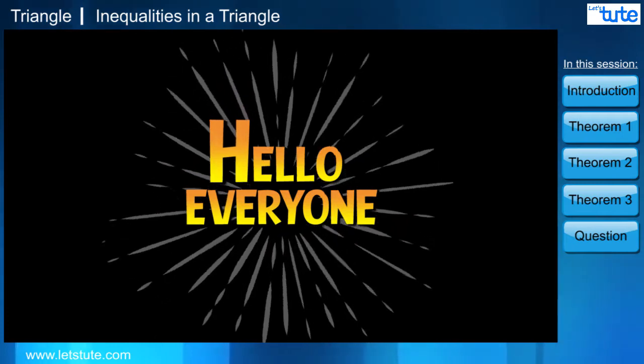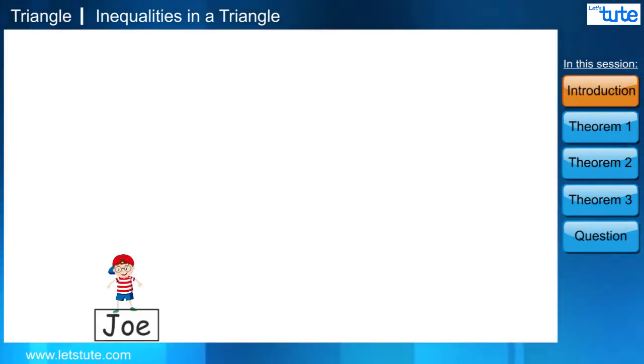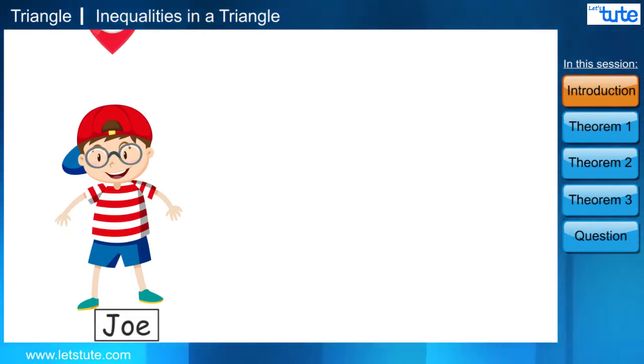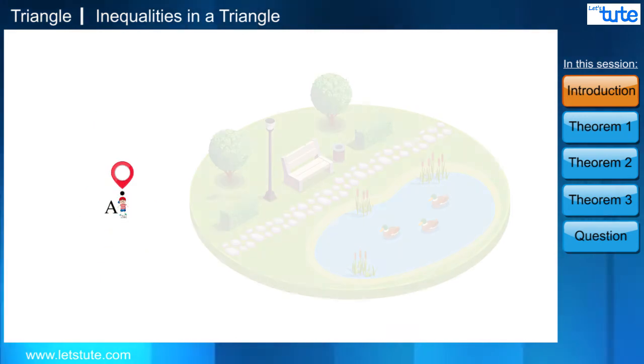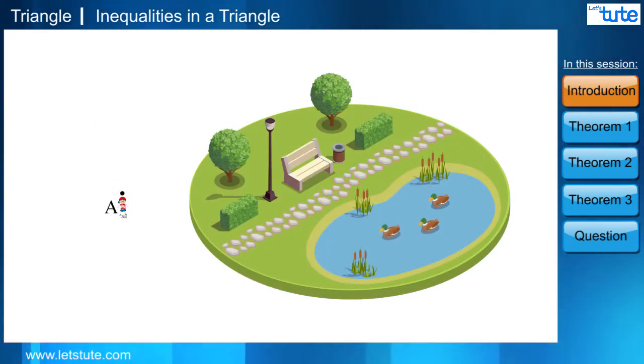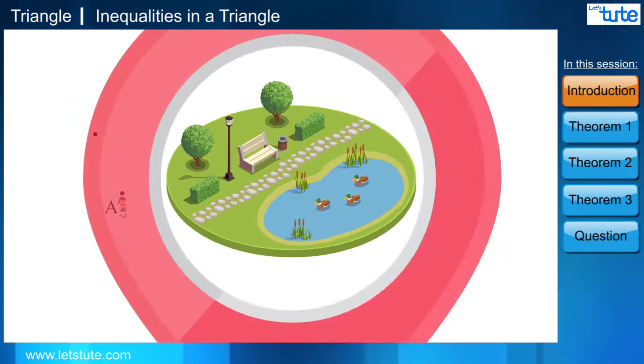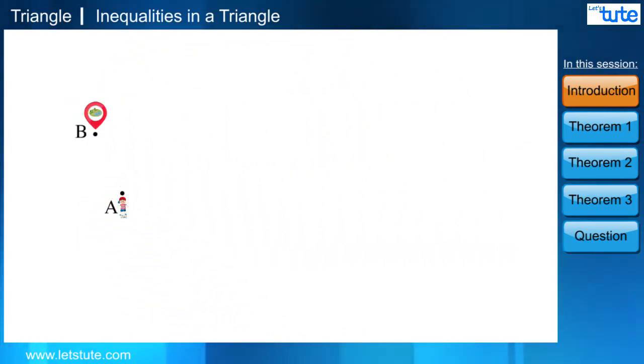Hello everyone. Let's look at one scenario. Joe who is standing at point A wants to go to a park which is situated here at this point. Let's consider this point as B and this point as C. Now there are two ways to go. Either he can go by this route, that is from A to C, then C to B or he can go by this route, that is from A to B.